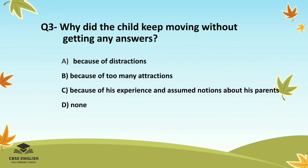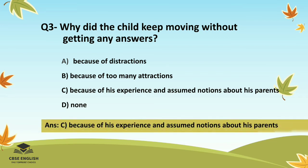Question number three: Why did the child keep moving without getting any answers? Options are: because of distractions; because of too many attractions; because of his experience and assumed notions about his parents; or none. The correct answer is because of his experience and assumed notions about his parents.